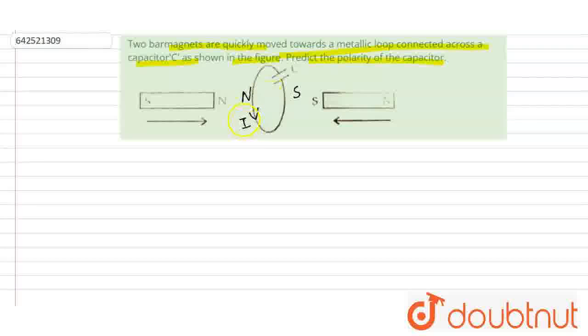And the direction of current is anticlockwise, as seen from the left. So, plate A of the capacitor, this is plate A and this is plate B.